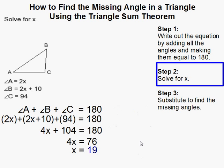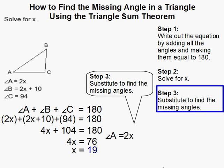Now we're not done yet, because we still have to find the measure of each angle. So now we need to substitute. Remember, A is 2x. So we substitute 19 for x, and that tells us that A is 38 degrees.